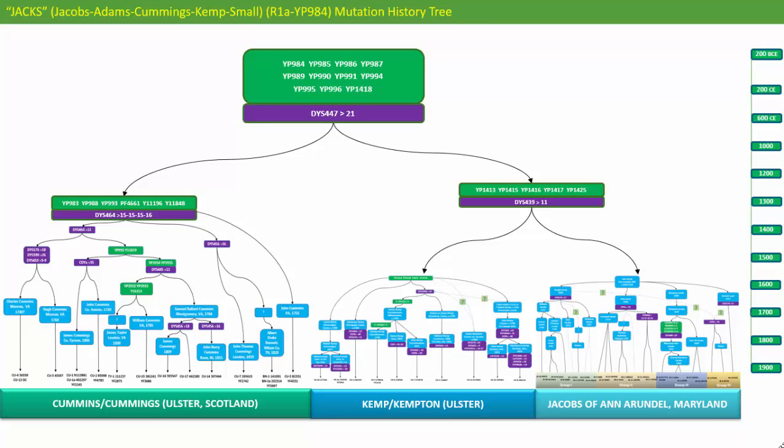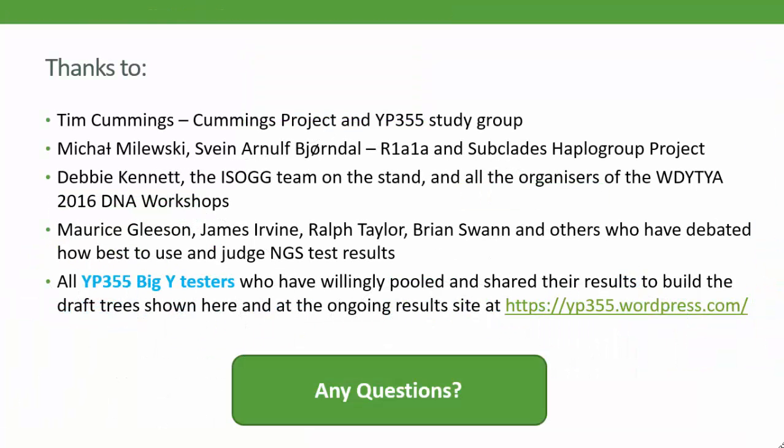It's important to stress that this is still only a draft or hypothetical tree. We've come a long way in just two years, but there's still a long way to go and many questions still to answer. Thanks are due to the many people who have helped with the thinking about how these SNP and STR results can be brought together and used to build more accurate trees. And a very special thanks goes to all of the testers in the YP355 study group, who have been open to sharing their results and data to help us all discover more about the origins of our surnames.